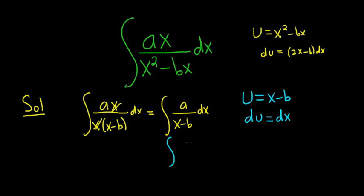And then du is simply going to be equal to dx. So this becomes the integral of a over u, du. If you like, you can pull the a out, and then this integral becomes more recognizable, because now it's 1 over u, du.